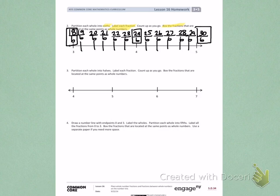Number 3: Partition each whole into halves. Label each fraction. Count up as you go. Box the fractions that are located at the same points as whole numbers. So again, similar to number 2, but I'm partitioning into halves — labeling the fractions and boxing the fractions that are whole numbers.